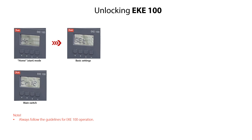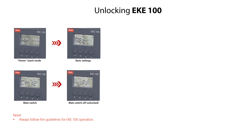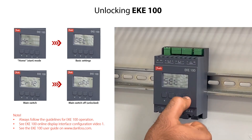Press the enter key again, which will set the main switch as off, as seen here. The EKE100 is now unlocked. Press the exit key to move one step back in the navigation structure so that you can start the EKE100 configuration. Please refer to the EKE100 online display interface configuration video 1 and the EKE100 user guide for details about how to read the display, understand the navigation structure, and understand the parameter abbreviations.